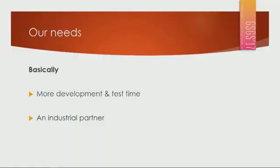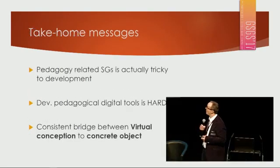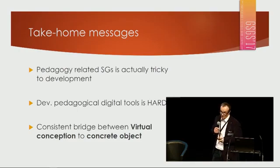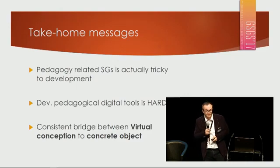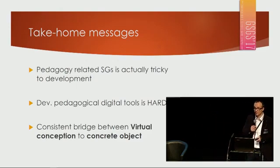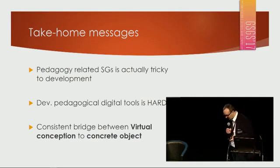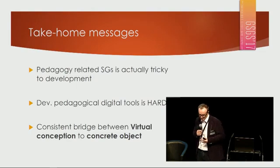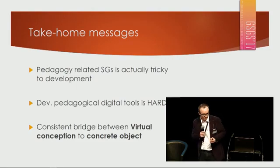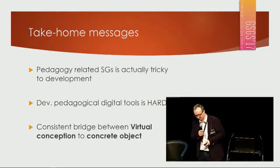Basically, what we need is more development, especially in the part where we create a physical object, plus more testing time. We would also like to have at least partial funding from a national fund and an industrial partner. For the takeaway message: it's a world of development that is really hard — much harder than I thought, but not in terms of computer science. We really believe that thinking about what is virtual and what is real, what is an object — whether you can touch it or not — is something that will be really needed in the future. Thank you.